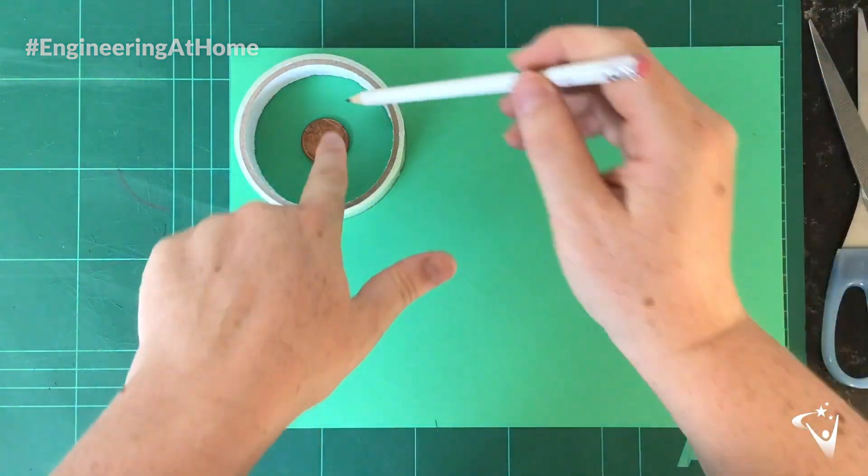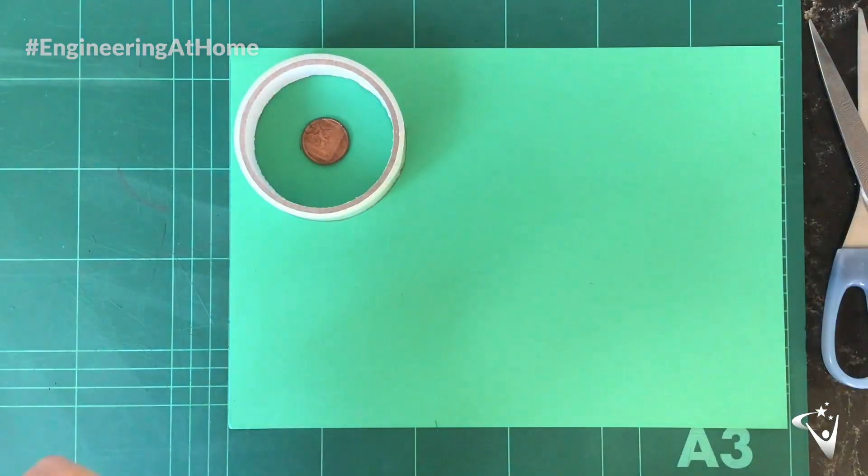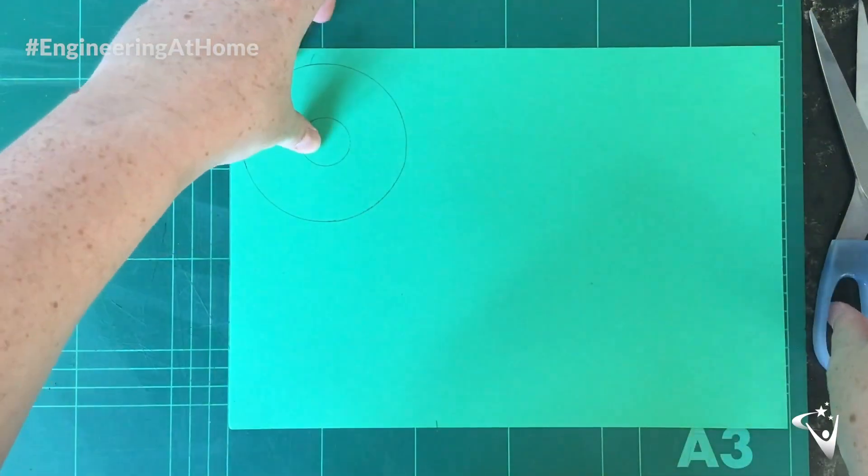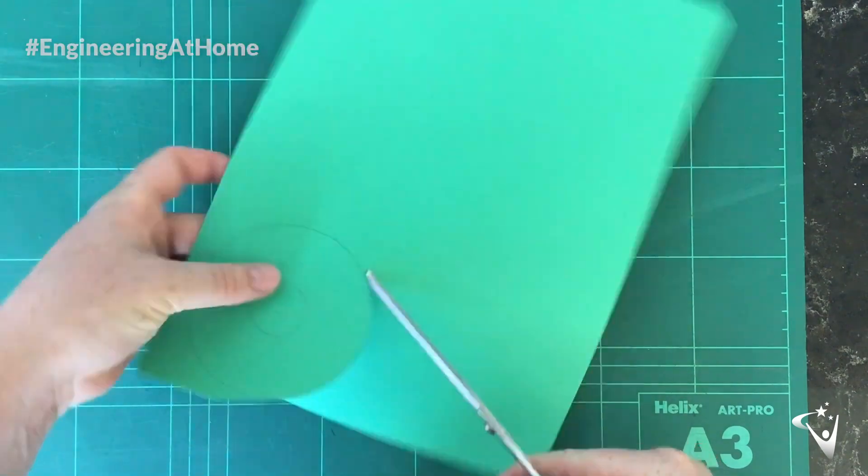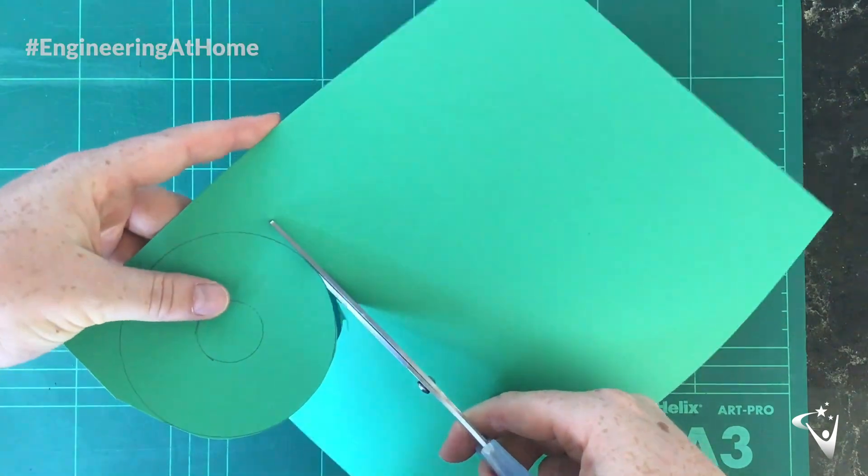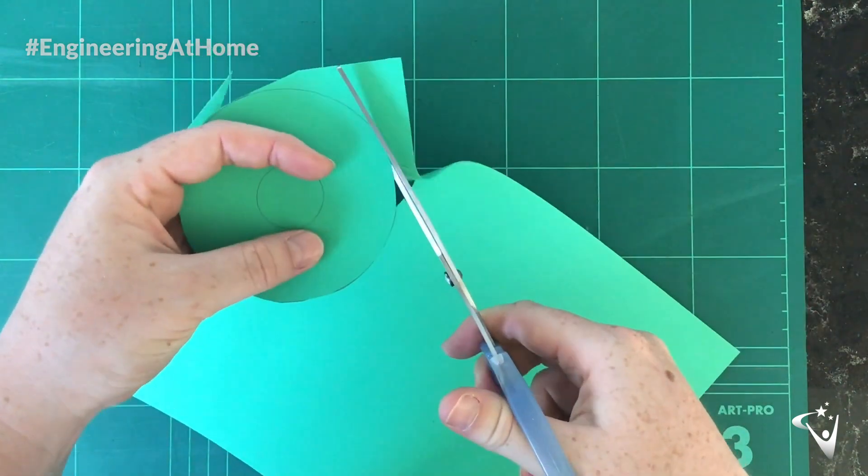I'm drawing around a circular object so I'm using a roll of tape, and inside of it I have a smaller circular object so I've just used a 2p coin. You want to make sure that the coin is right in the center to make sure that this propeller is balanced. You're then going to need to cut out around that bigger circle outline.